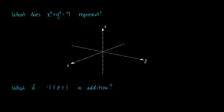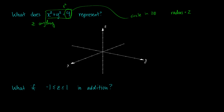What does x² + y² = 4 represent? We've seen this in two dimensions — it's a circle. But we have three axes here, so z can be anything. The right-hand side is the radius squared, so the radius is 2. We center the circle at the origin and draw it with radius 2. Since z can be anything, it's not just the circle at z = 0 — it covers everything above and below, making it essentially a cylinder.